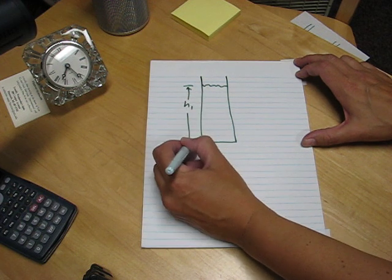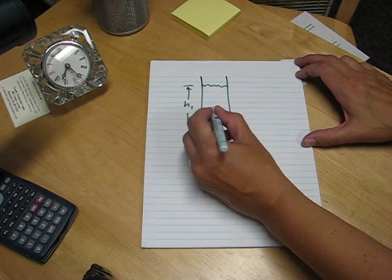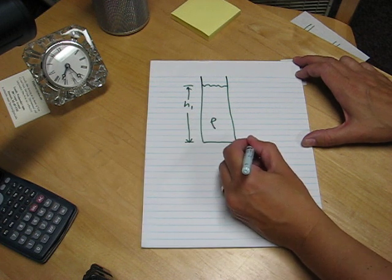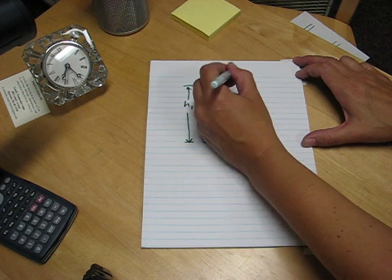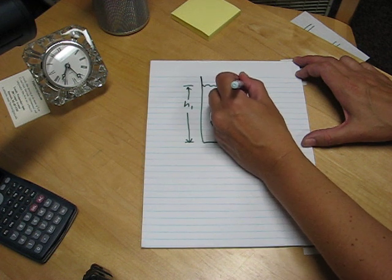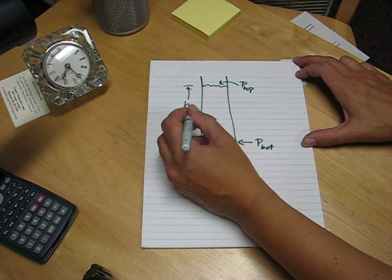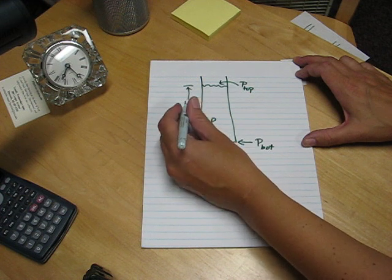And this fluid has a density ρ, then the rule is that the pressure at the bottom is equal to the pressure at the top plus ρ times gravity times H.